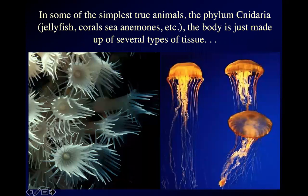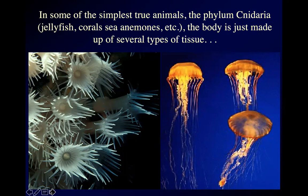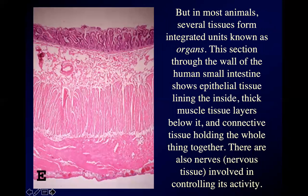In some of the simplest true animals — that's the phylum Cnidaria, which is Greek for stinging nettles — jellyfish and sea anemones and corals have stings, and the body is made up of several types of tissue kind of wrapped around each other. But as I was saying, in most animals you'll get two, three, or four tissue types coming together to form these integrated units that we call organs.